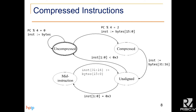The final extension that GEM5 currently supports is the compressed extension, which introduces half-length instructions — two bytes instead of four. Before adding this extension, the decoder was fairly simple: all it had to do was advance the PC by four bytes, fetch the four bytes, and then decode them. But with the introduction of half-length instructions, a more complicated state machine has to be added to account for the fact that not all instructions are going to be aligned on a four-byte boundary.